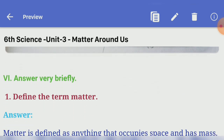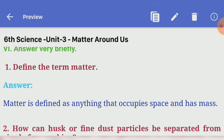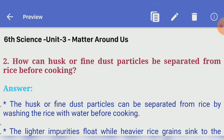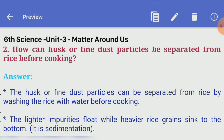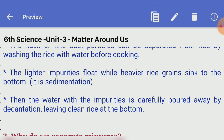Answer very briefly. First: define the term matter. Answer — matter is defined as anything that occupies space and has mass. Second: how can husk or fine dust particles be separated from rice before cooking? Answer — wash rice with water; the lighter impurities float while heavier rice grains sink to the bottom — this is sedimentation. Then the water with impurities is carefully poured away by decantation, leaving clean rice at the bottom.